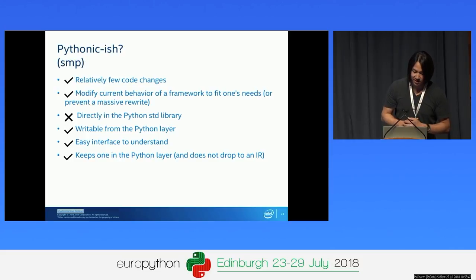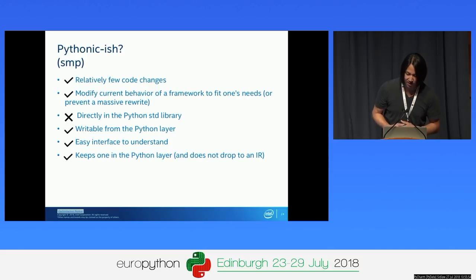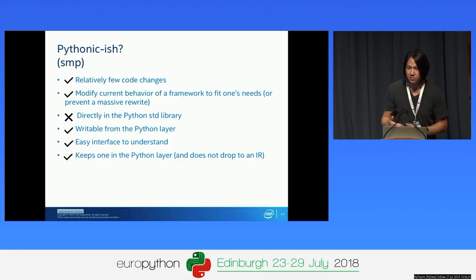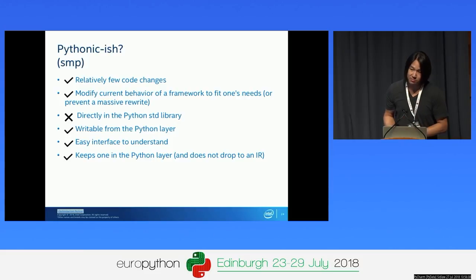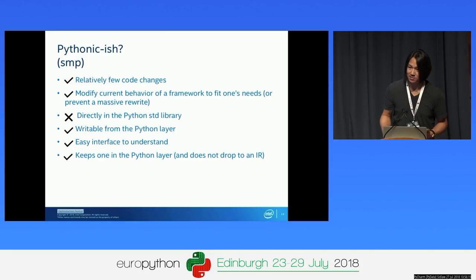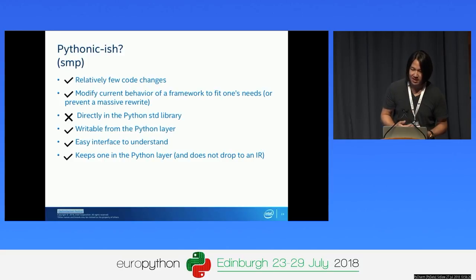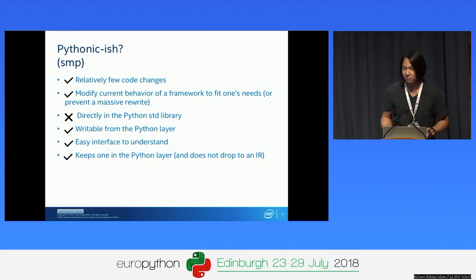Looking under the lens of SMP, it requires relatively few code changes and doesn't modify any current framework behavior. Interestingly, it is somewhat writable from the Python layer because it does have an API you can use, though you can also use it without that—just running it under the SMP module and letting it pass down settings. It's relatively easy to understand and keeps you in the Python layer. SMP is completely written in Python—you can look at it on our GitHub—it's a pure Python package, making it relatively simple to integrate into a solution or into other people's frameworks.